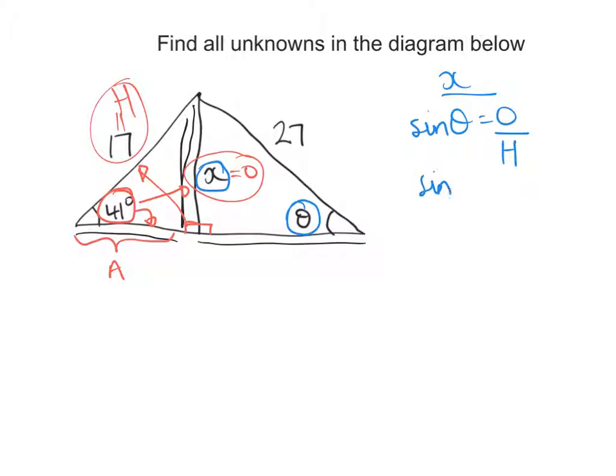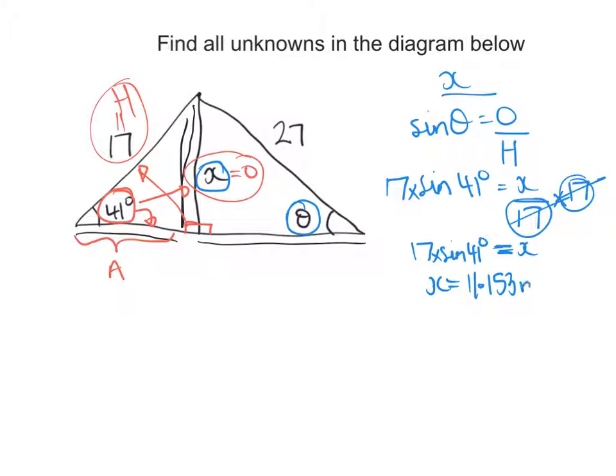So sine of 41 is equal to the opposite side which is x, we don't know, divided by 17. Now what we'll do is times by 17 on both sides, because divided by 17 times by 17, they'll cancel out and just leave us with the x. And 17 times sine of 41, we can plug into our calculator and it should tell us that x is equal to 11.153 meters. Now I'll round that to 11.15 meters.